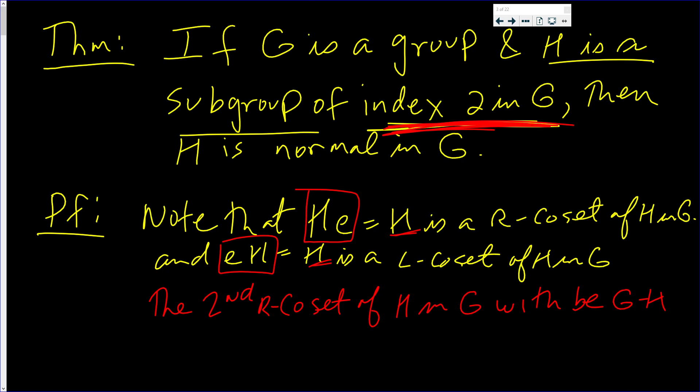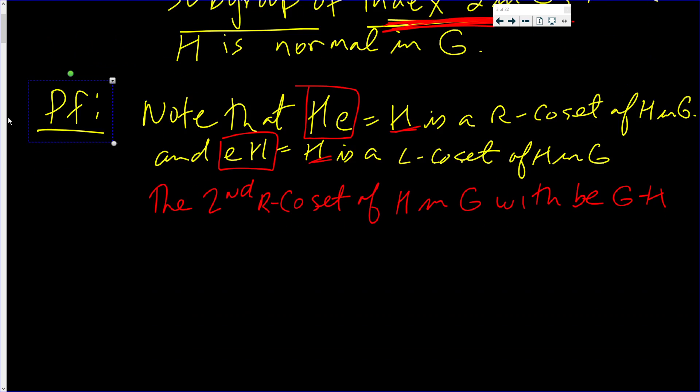Basically, what's going on is the following: You have this set G, and it's split up into two right cosets. One is HE, that's this one, and then you have another one. We'll call it G minus H. It's the other coset.